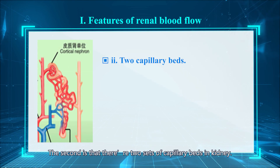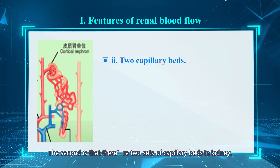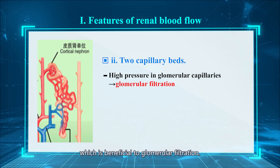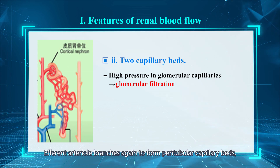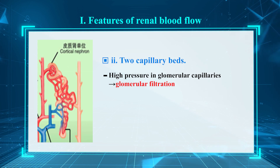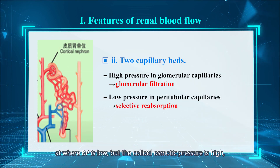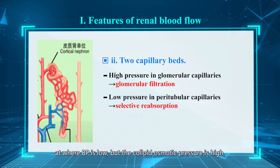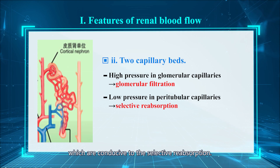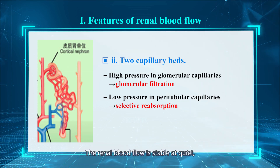The second feature is that there are two sets of capillary beds in the kidneys. Blood pressure in the glomerular capillary is high, which is beneficial to glomerular filtration. Efferent arterioles branch again to form peritubular capillary beds, where blood pressure is low and colloid osmotic pressure is high, which are conducive to selective reabsorption.